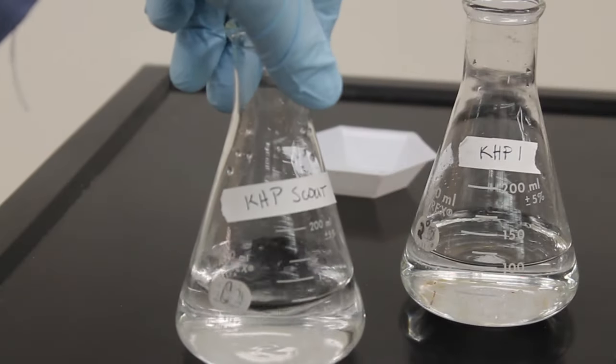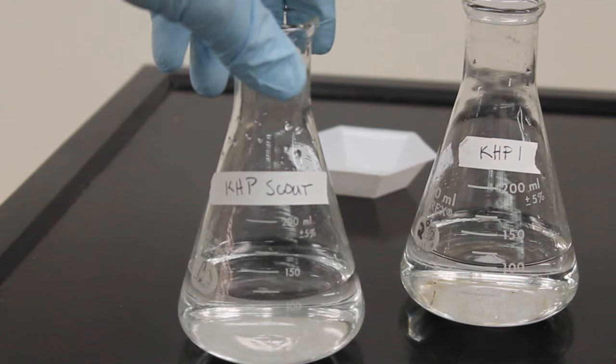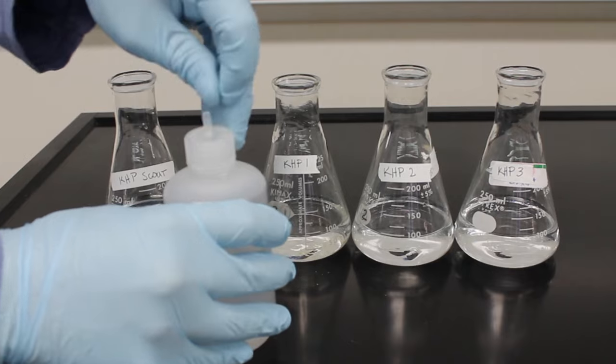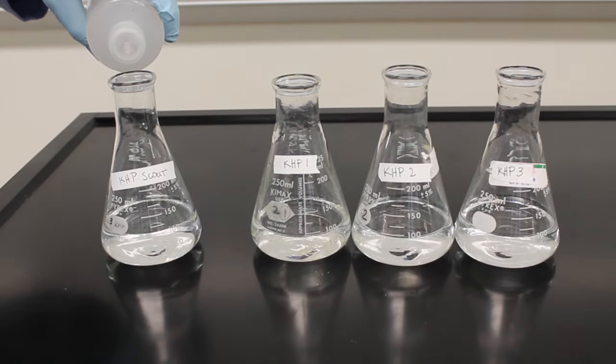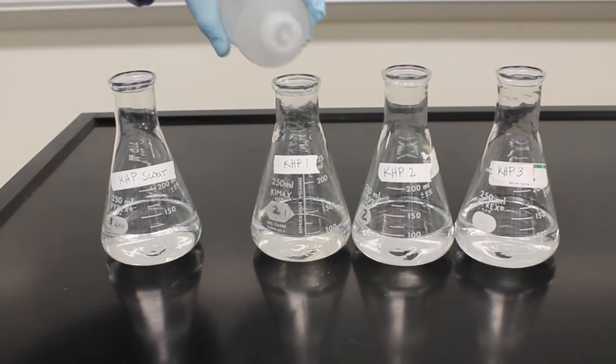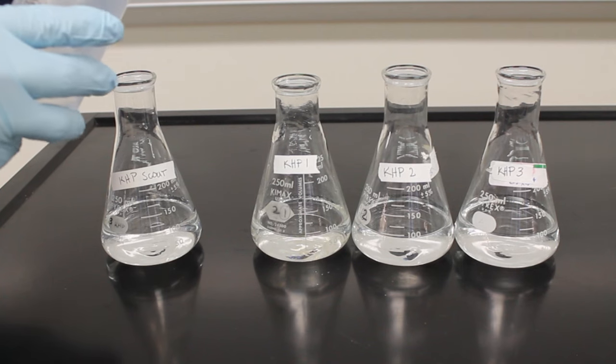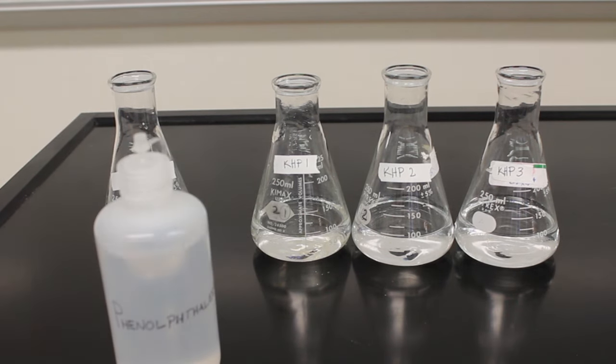Here I am doing 4 titrations. The first one is known as a scout titration. More on this in a bit. Next, add a few drops of phenolphthalein. 2 or 3 drops per flask will be sufficient. Now we are completely ready to start our titrations.